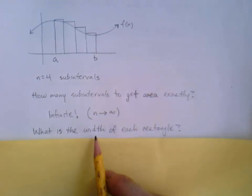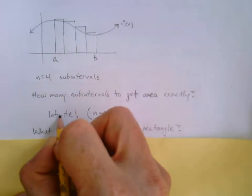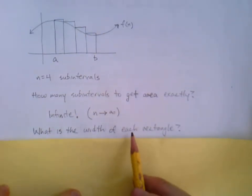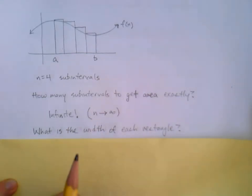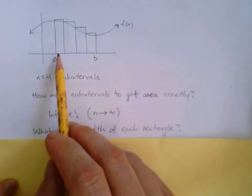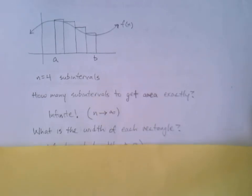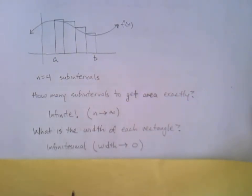We always need the width of each rectangle—it's the height times the width to get the area of each one. If there's infinitely many, what's the width of each rectangle? The more rectangles you pack in there, the smaller their width. If there's infinitely many, what's the width? Here's the thing: we can't say that it's zero. It is shrinking but it's not zero. We're going to call it infinitesimal. It's infinitely tiny. The width is approaching zero; it never gets to zero, but it is approaching zero as n approaches infinity.